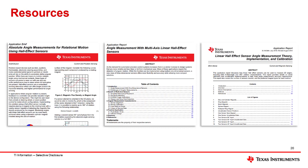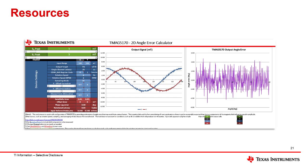To learn more about angle sensing, please refer to the following resources: Absolute angle measurements for rotational motion using Hall effect sensors, Angle measurements with multi-axis linear Hall effect sensors, Linear Hall effect sensor angle measurement theory, implementation, and calibration, and the TMAG 5170 2D angle error calculator, which is available in the tools section of the product page.